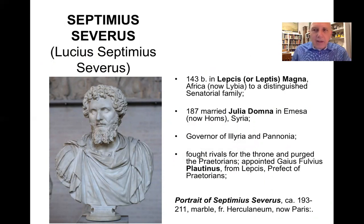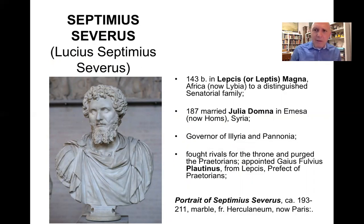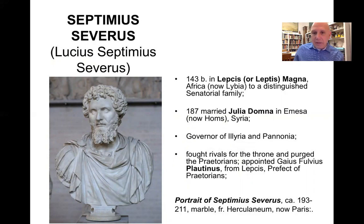Septimius Severus was born in North Africa, part of a series of emperors after Trajan and Hadrian who were born in the provinces. He was born in Leptis Magna, now modern-day Libya, and came from a distinguished Roman senatorial family in the African province. He married a woman from the Near East named Julia Domna, born in Homs, Syria — the ancient Emessa — who would be an important figure during his long reign and in Roman history generally.